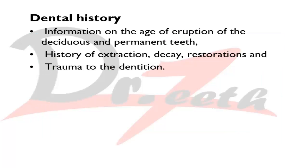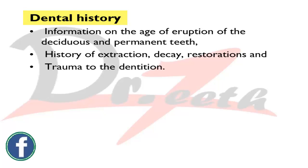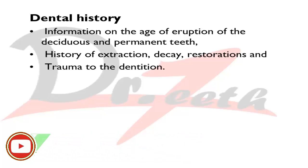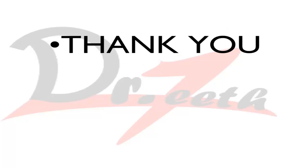Coming to dental history: check the age of eruption of deciduous and permanent teeth to get a rough idea of how the patient's teeth are developing and what type of malocclusion to expect. Ask about the history of extractions, decay, restorations, and trauma to the dentition. Teeth that have had trauma often become ankylosed, making orthodontic treatment very difficult. Decay and restorations give a rough idea of the patient's oral hygiene.